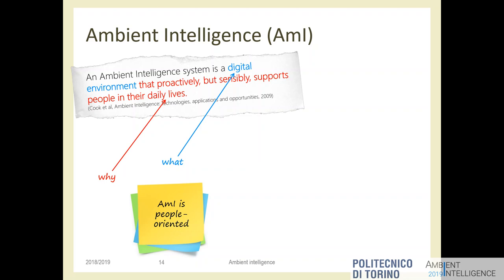The AmI system proactively but sensibly supports people in their daily lives. Proactively means the environment will act before being asked. It's not a reactive system where the user pushes a button and the system responds — a proactive system reacts or acts before the user requires it, because the system understands what the user wants, so the user doesn't even need to ask.